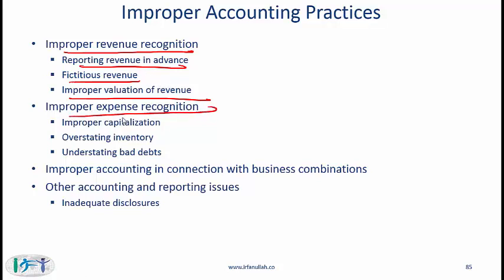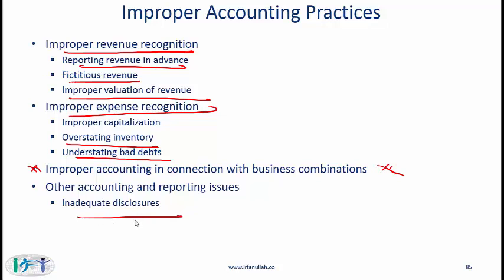Improper expense recognition is another area — where a company should be expensing costs but instead capitalizes them to reduce reported expenses. Other manipulations include overstating inventory and understating bad debts. Improper accounting in connection with business combinations will be studied at Level 2. Other reporting issues include failing to provide full disclosures.